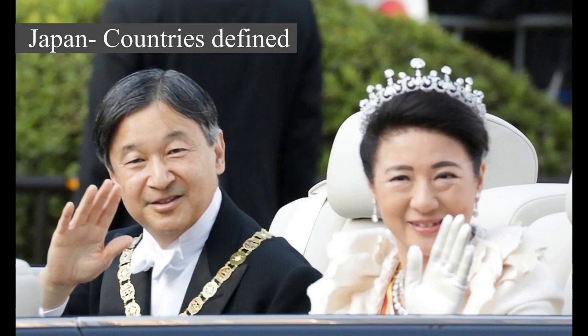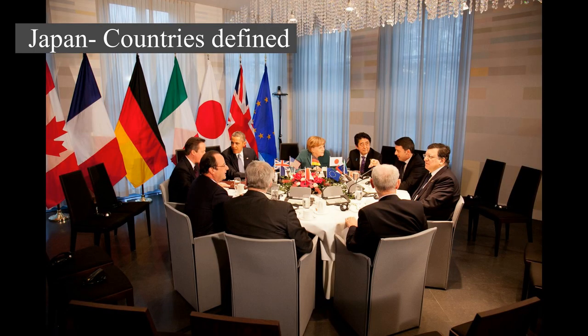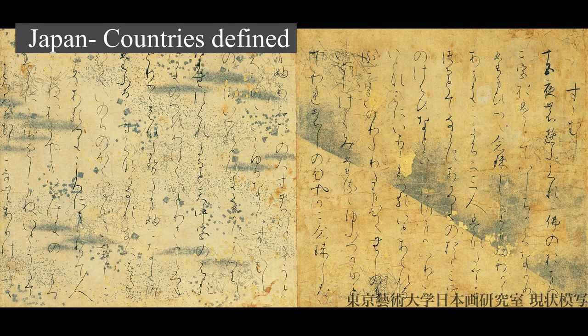Power was enforced by a class of warrior nobility, the samurai. After a century-long period of civil war, the country was reunified in 1603 under the Tokugawa shogunate, which enacted an isolationist foreign policy. In 1854, a United States fleet forced Japan to open trade to the West, which led to the end of the shogunate and the restoration of imperial power in 1868. In the Meiji period, the Empire of Japan adopted a western-modeled constitution and pursued a program of industrialization and modernization.